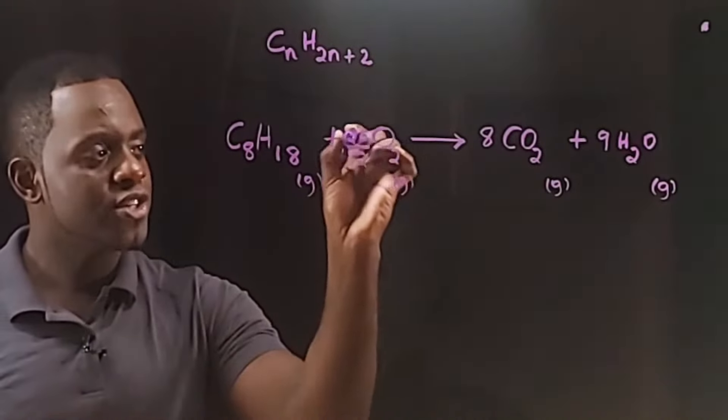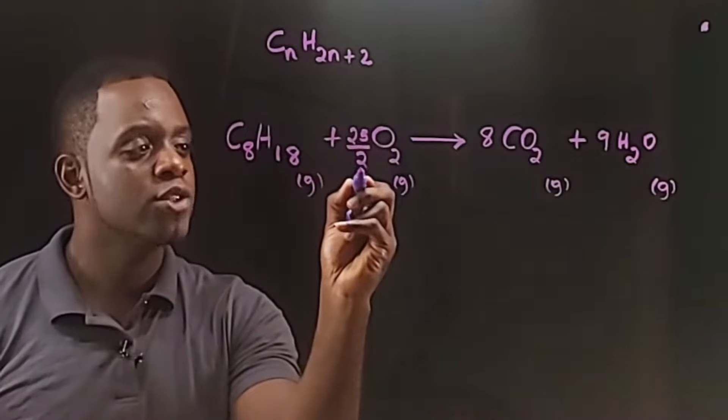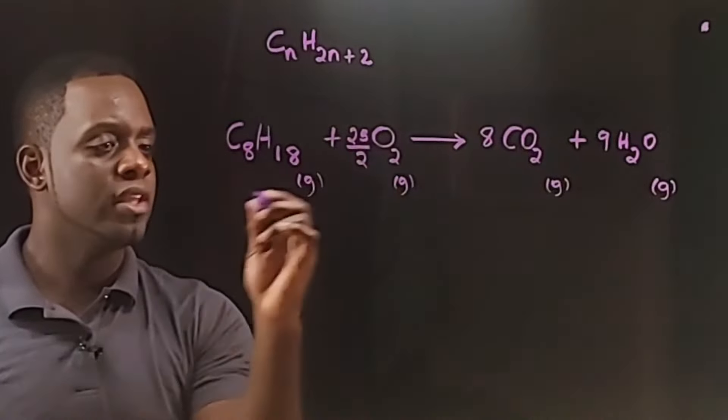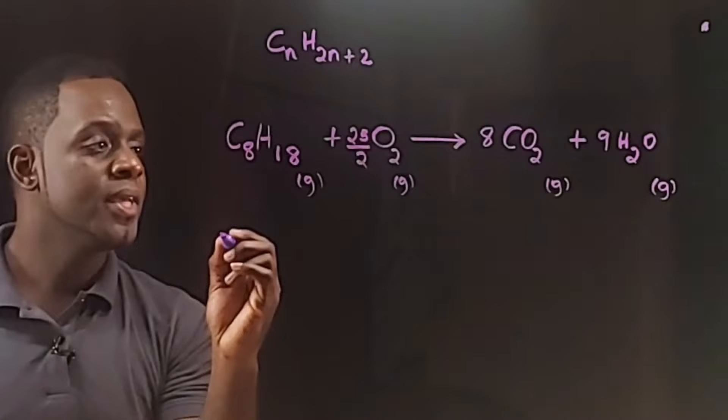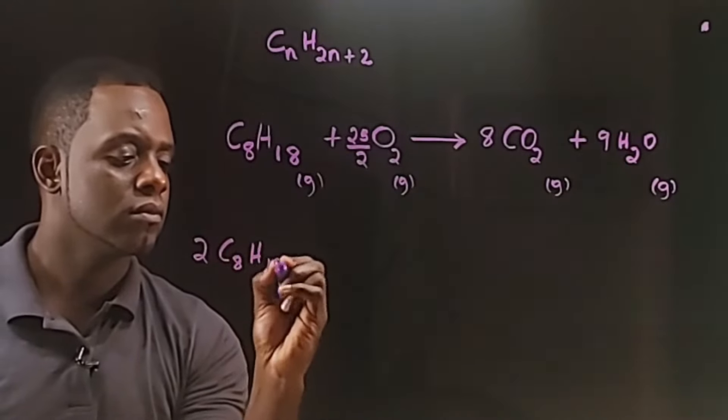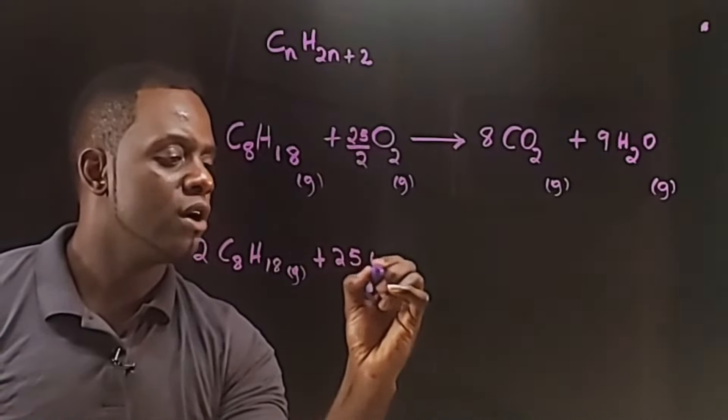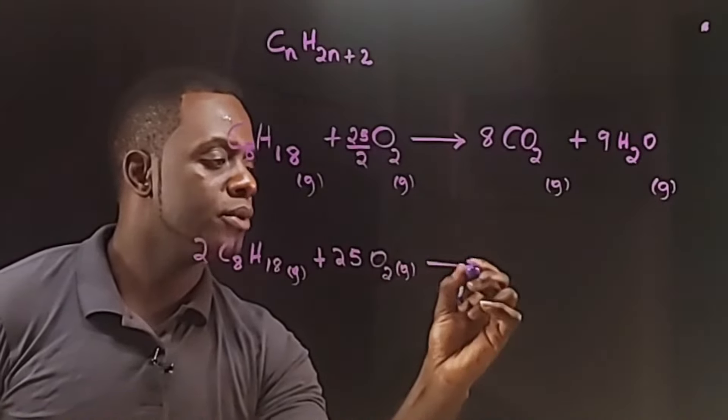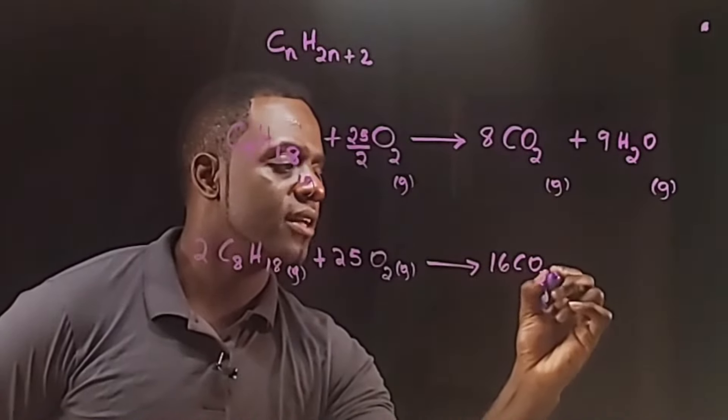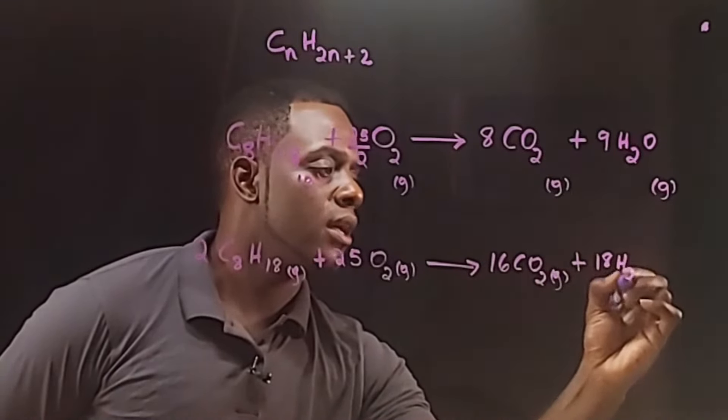Now to get rid of this fraction, what we can do is multiply all the coefficients by this denominator 2 to get rid of this fraction. And so multiplying everything by 2 will give us, let's rewrite the equation: 2 octane molecules plus 25 oxygen molecules producing 16 carbon dioxide molecules and 18 water molecules.